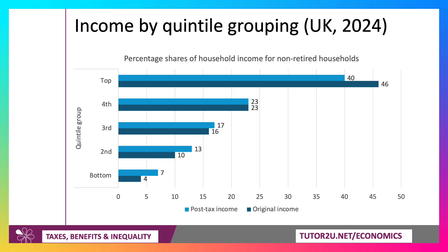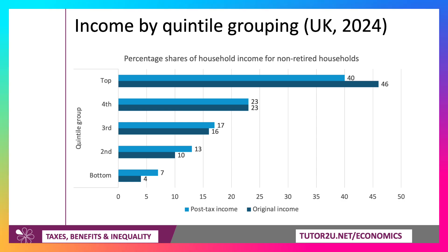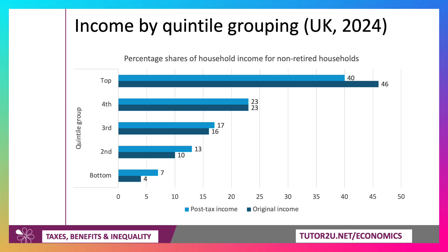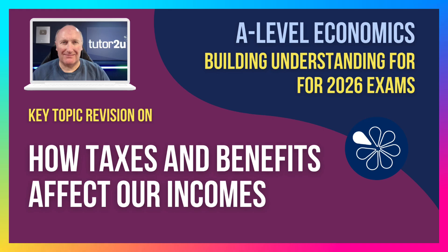If we think about post-tax income — that's the effect of direct tax, cash benefits, and indirect taxes, shown in the lighter blue — the share of the richest 20% comes down from 46% to 40%, still high. The share of the third and fourth quintiles is broadly unchanged. The share of the poorest two quintiles goes up: the second quintile from 10% to 13%, and the bottom from 4% to 7%. But even after the effects of cash benefits, direct taxes, and indirect taxes, the bottom 20% of non-retired households still only have 7% of post-tax income in the UK.